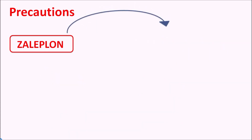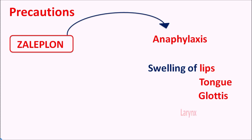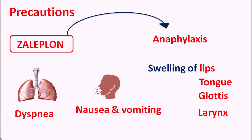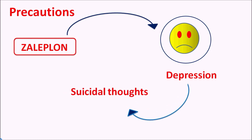Similarly, this drug can produce anaphylaxis reactions. It can produce swelling of the lips, glottis, and larynx, and can even produce dyspnea — difficulty in breathing — and nausea and vomiting, all due to anaphylaxis. Also, this drug should be carefully given in patients who have depression, because it can further increase depression and can increase suicidal thoughts in patients.